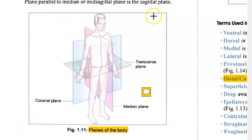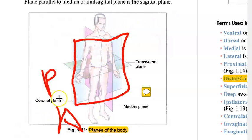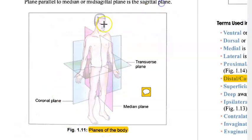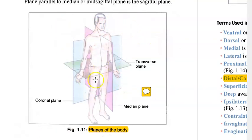Now the planes of the body — very important. The coronal plane divides the body into anterior and posterior. The sagittal plane divides the body into right and left. Always remember: when we say right and left, we are referring to the patient's right and left.